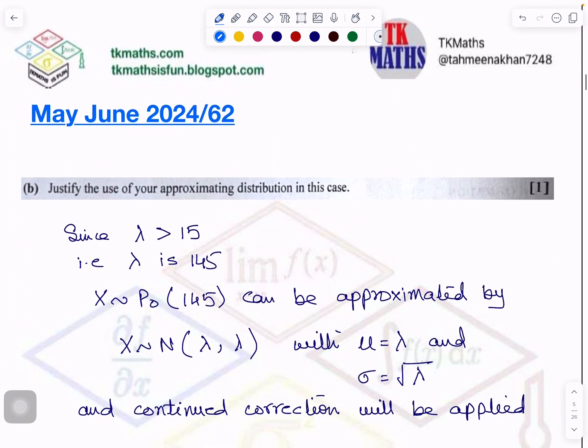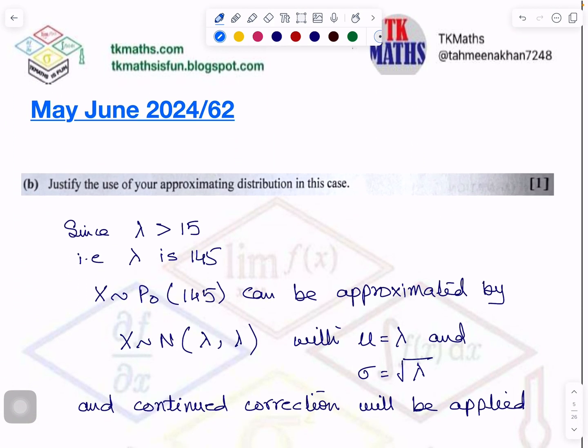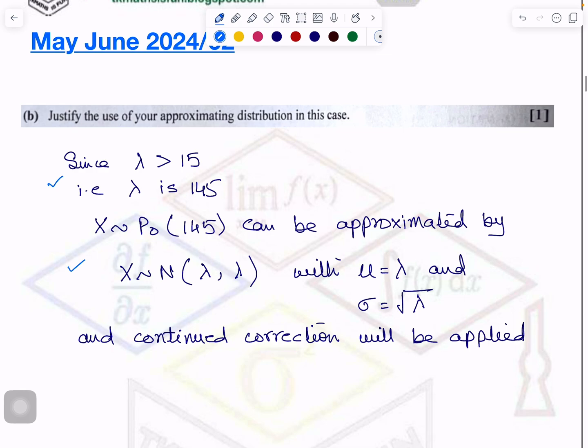The second part of the question is justify the use of your approximation distribution. You are writing this condition here again, the distribution here again, and telling that continuity correction is a must. You have explained here.